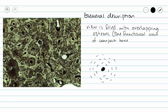Here we have an osteon. The entire circular structure is called an osteon, and sometimes an osteon is called a Haversian system.